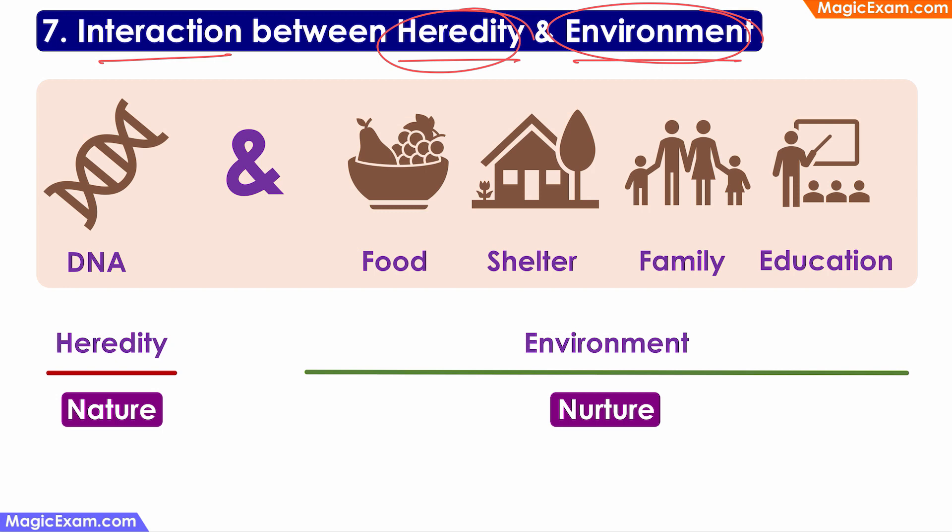A child's parents might be tall and strong, and therefore the child has inherited attributes from the parents through the DNA or through the genes, which say that the child also can grow into a tall and strong person. But just by having the genetic information, the child will not automatically grow into a tall and strong person.